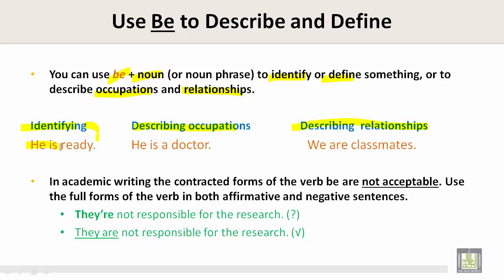Under identifying, we have: he is ready. Under describing occupations, we can say: he is a doctor. And under describing relationships, you can say: we are classmates.